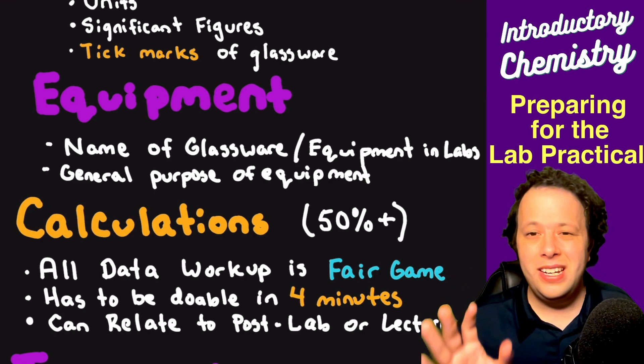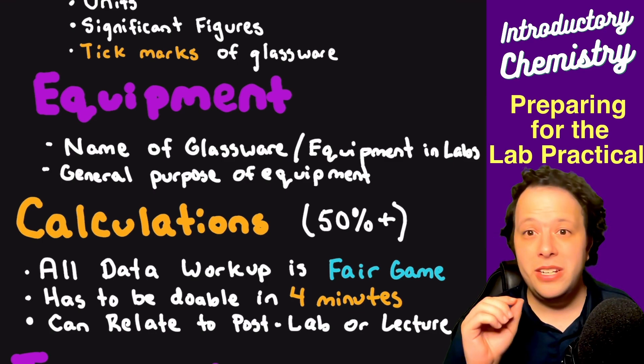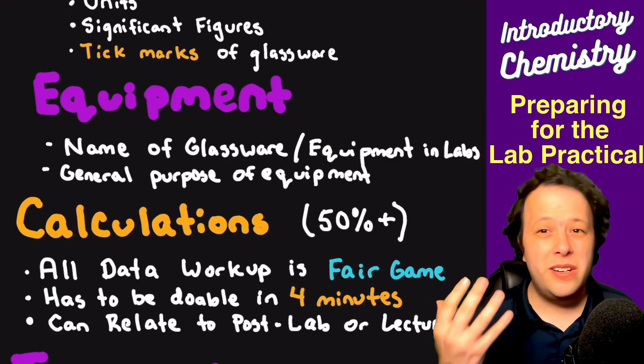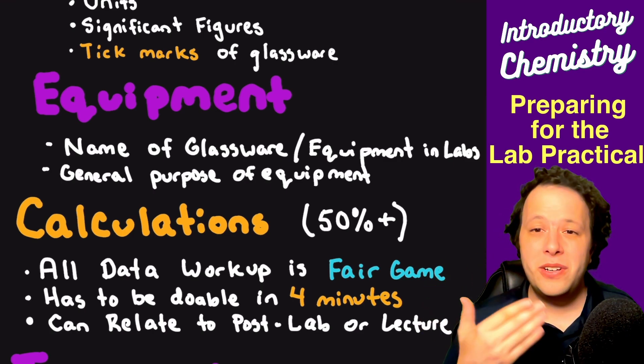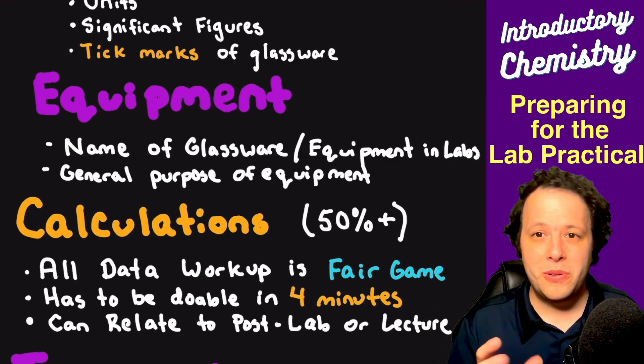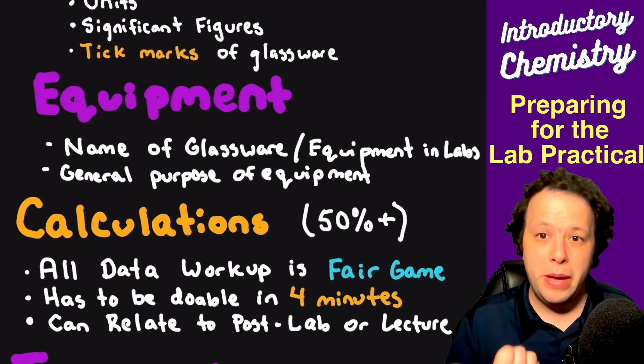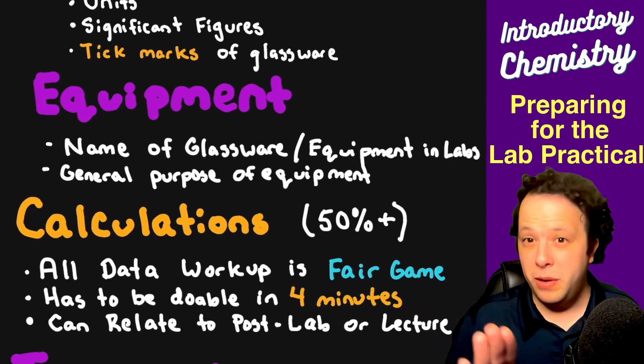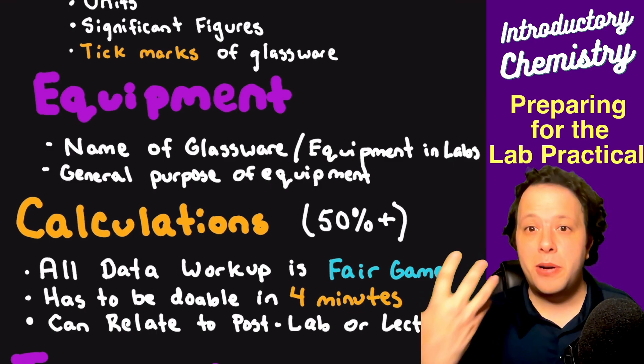The next part is equipment. Can you name basic glassware that you use in your labs? This is the easy point questions. You should know what a beaker is, what an Erlenmeyer flask is, what a thermometer is, what a pipette is, what a volumetric flask is. If some of these names are things you don't recognize, then I recommend reviewing your glassware. There's probably a study guide in Canvas that has flashcards of all the glassware. In many of our lab manuals, we have a list of all the glassware with pictures for you to refer to.